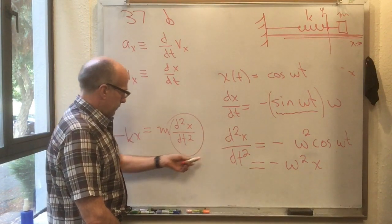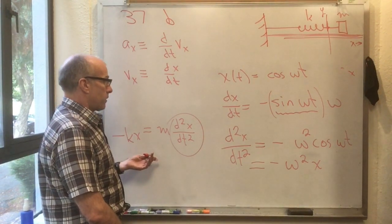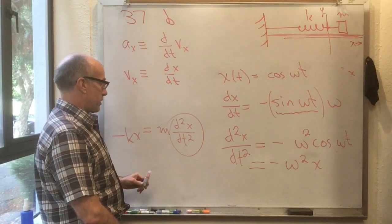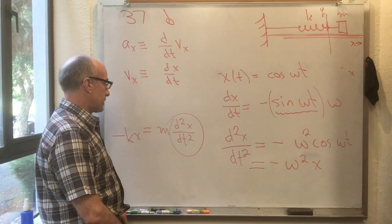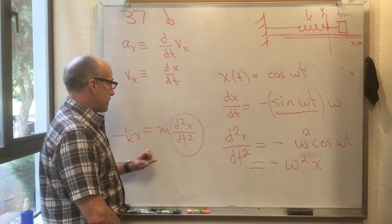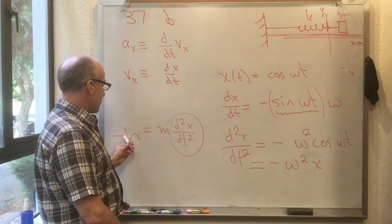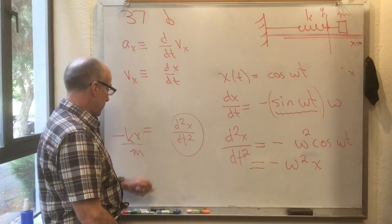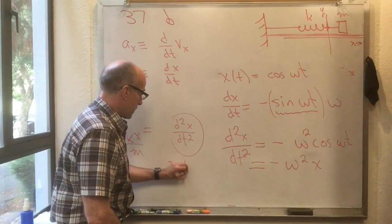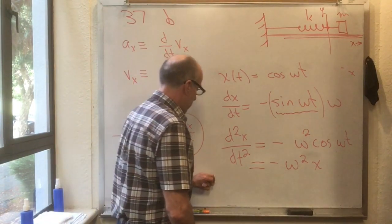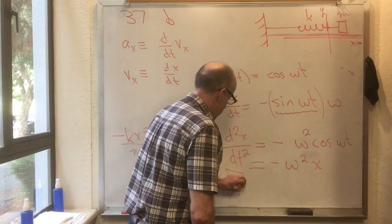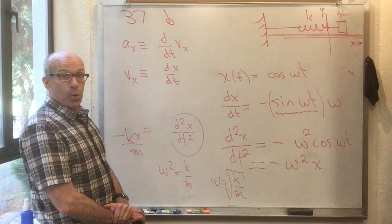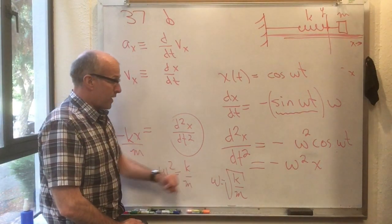Which looks awful lot like this. This one said minus kx is equal to m d squared x dt squared. Well, this all works. These two equations 100% agree with each other. d squared x dt squared equals minus omega squared x. And d squared x dt squared is equal to minus kx over m. Provided omega squared equals k over m, or provided omega equals root k over m. So the guess works, provided omega is that.